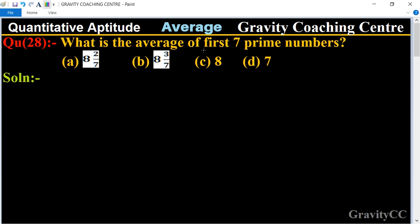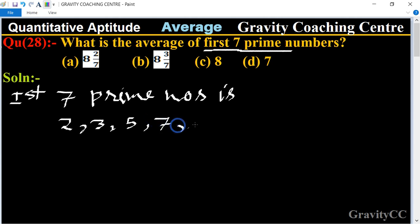So, in this question, first of all, we write first seven prime numbers. First seven prime numbers is 2, 3, 5, 7, 11, 13, 17.